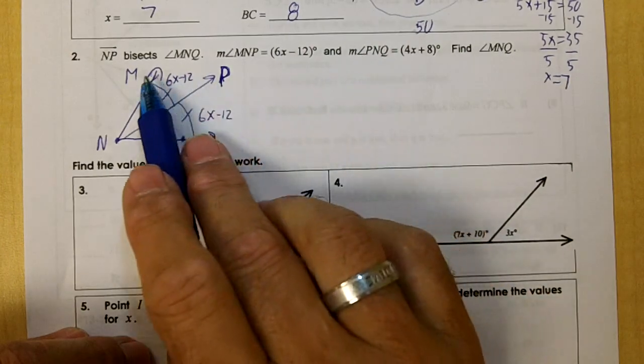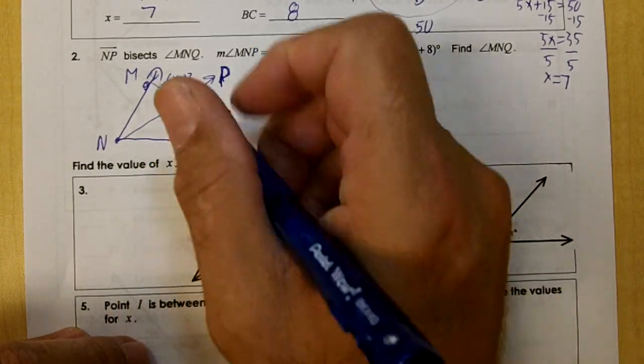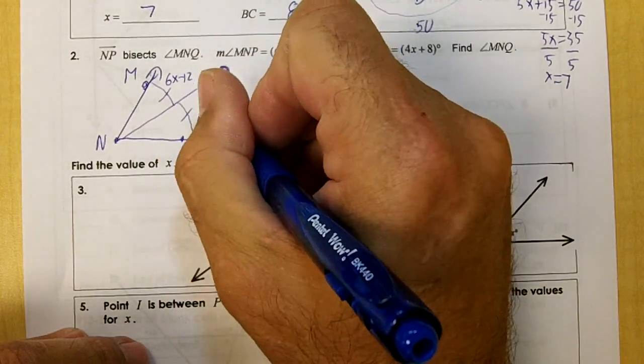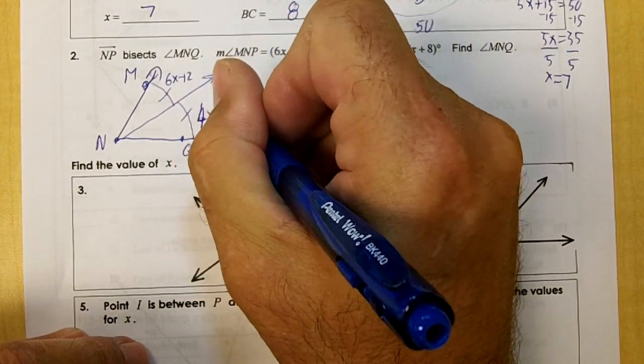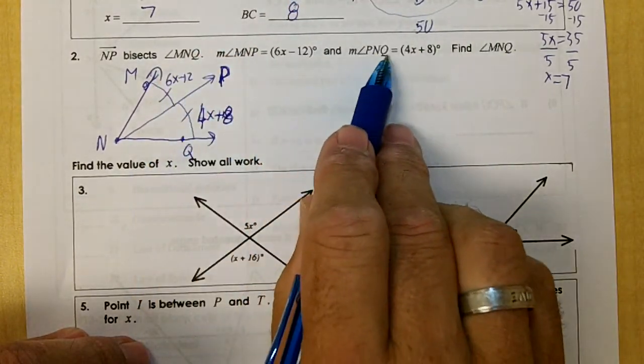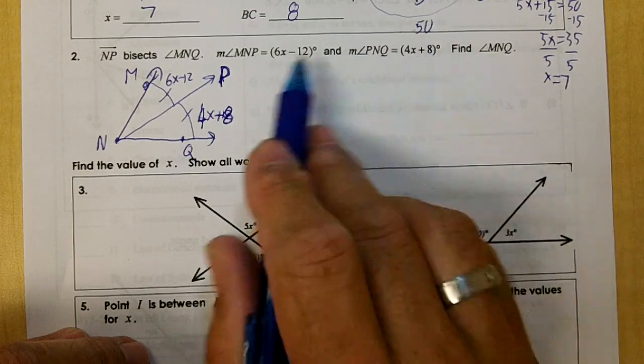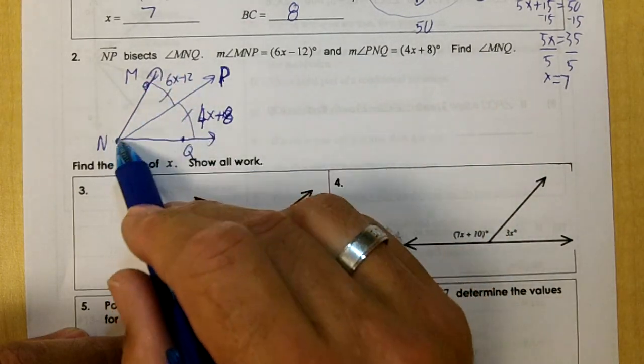The angle PNQ is 4X plus 8. I got ahead of myself. This is going to be the same as that, but PNQ is 4X plus 8. Find angle MNQ. We want the whole angle.